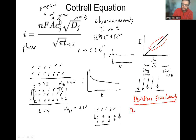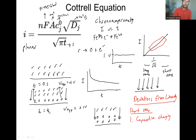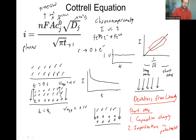In practice there's a linear regime in the middle, with deviations at short and long times. At short times, there are two main reasons for deviations. The first is capacitive charging: when you first apply the potential step, you have to set up the double layer, which takes time and produces non-Faradaic current. The second is imperfections in the potential step itself — any electronics take some time, usually on the order of microseconds, to actually apply the voltage.